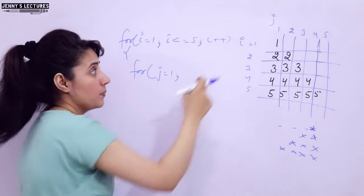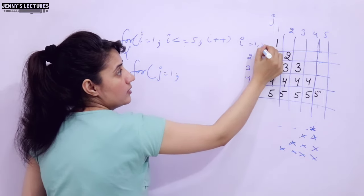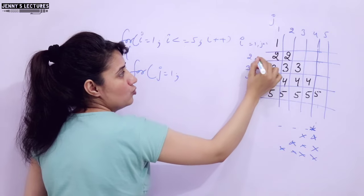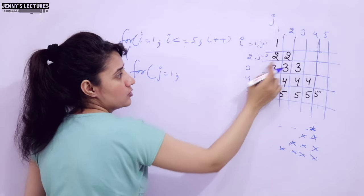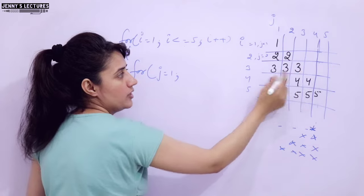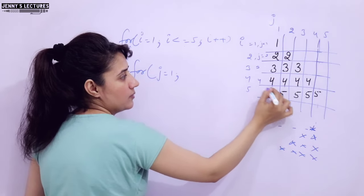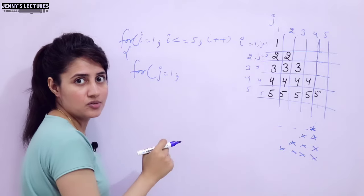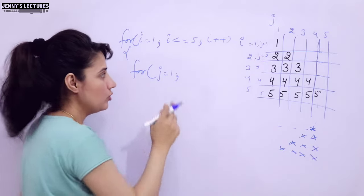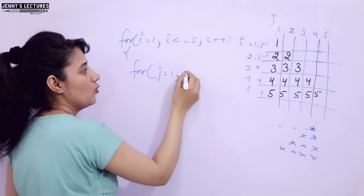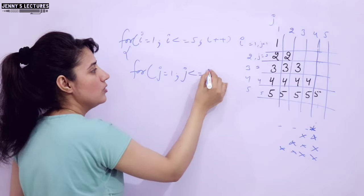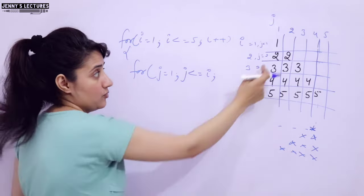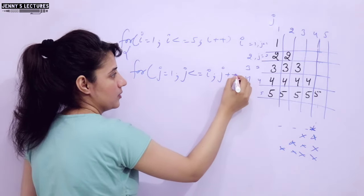So what condition will you put? When i value is 1, j would repeat only 1 time. When i value is 2, j would repeat 2 times. When i value is 3, j would repeat 3 times. Here 4 times, here 5 times. So you can put j equals 1, j less than equal to i, and j plus plus.